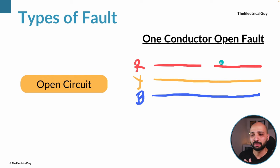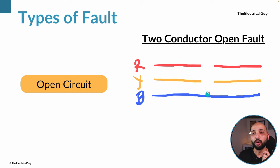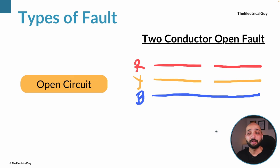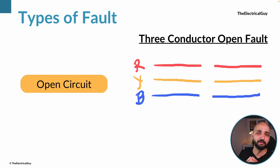In an open circuit, since the conductor is broken, the load of that conductor falls on the Y and B phases, so those two phases will have to carry additional load. As a result, the temperature of the conductor will increase, creating further issues. There can also be a two conductor open fault where two phases are broken, or a three conductor open fault where all three are down. The severity of open circuit faults is not as high as short circuit faults.